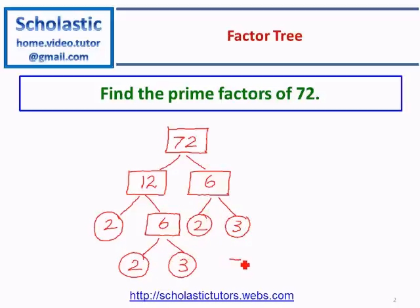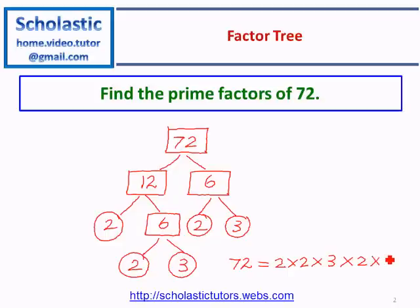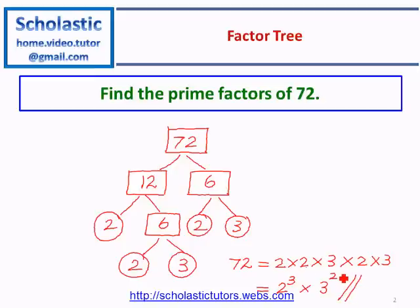We can now write 72 in terms of its prime factors: 72 equals 2 times 2 times 2 times 3 times 3, which can also be written as 2 to the power 3 times 3 to the power 2. This is the answer to the factorization problem.